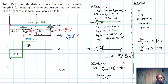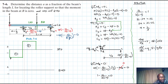From B to C there is no distributed force, so the slope of shear is zero and shear remains zero throughout. There is no magnitude from that point onwards.